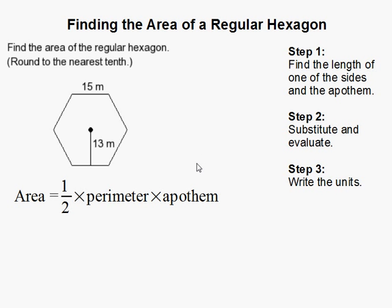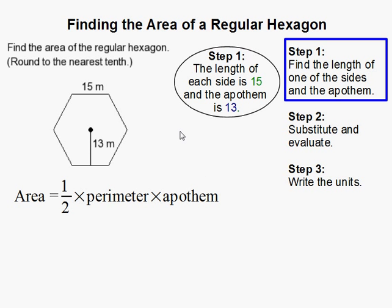How to find the area of a regular hexagon using the apothem. The first thing you need to do is find the length of the sides and the length of the apothem.